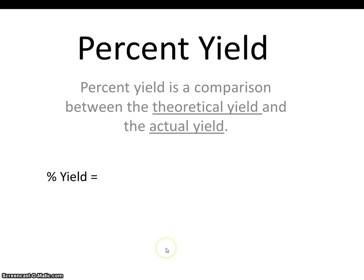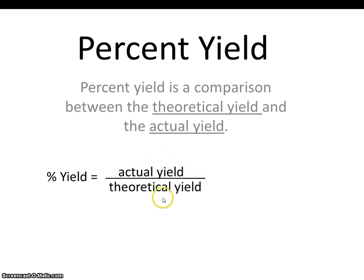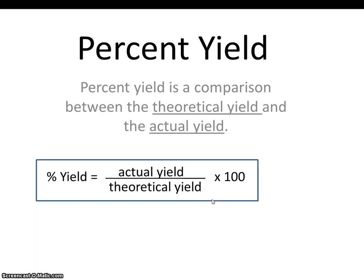The formula for percent is just like it always is: part over whole. The actual amount you made is 7, and the number you could have made in theory is 10. So in this case, your percent yield for peanut butter and jelly sandwiches would be 70%. Rather unimpressive.